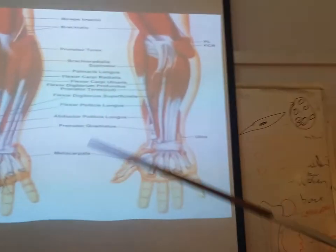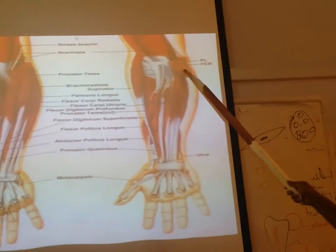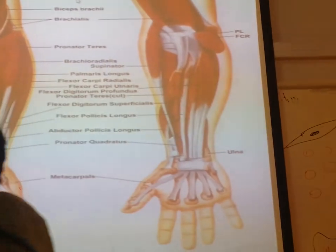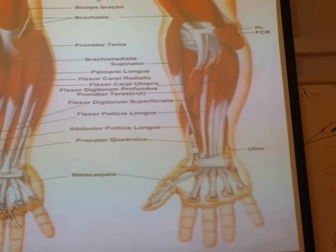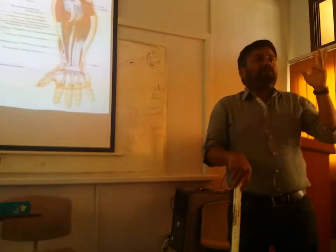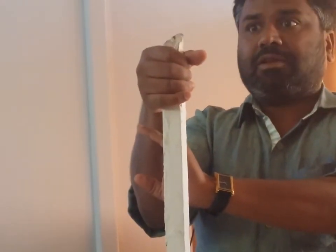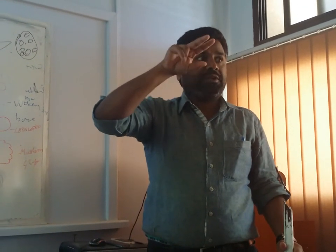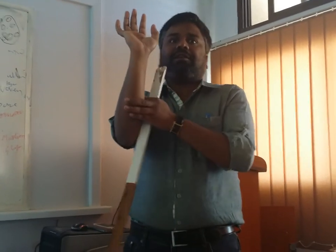The deep muscles are three. When the superficial muscles are cut away, you find: number one, flexor pollicis longus; number two, flexor digitorum profundus; number three, pronator quadratus. These are the three deep muscles. Flexor pollicis longus goes to the thumb. There are two digitorum muscles — one superficialis and one profundus. Altogether these are eight muscles in the flexor compartment.